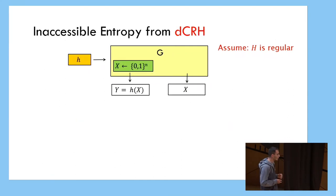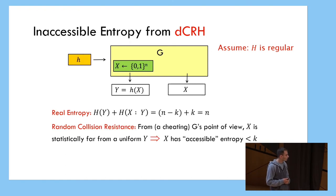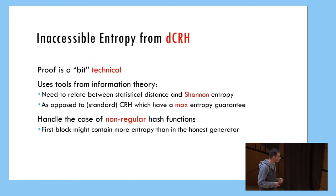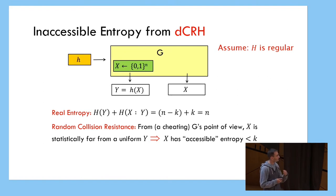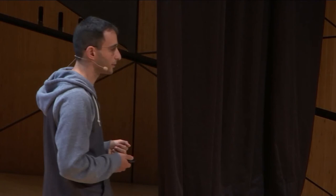Even if you take a cheating generator — no matter how it samples some randomness s1, outputs some y, uses randomness s2, and outputs some x in the pre-image of y — the real entropy is the same. But the accessible entropy is the entropy of y plus the entropy of x conditioned on y and s1. For any efficient generator, if conditioned on the randomness of the first message, the second message has no more entropy. This is why we have inaccessible entropy. Now replace CRH with DCRH: the real entropy is still the same, but we have a weak notion of inaccessible entropy, because from a cheating generator, x can be quite random but it has to be statistically far from a random pre-image of y. And if you're statistically far from a uniform random variable, you have less entropy than that variable. This is the heart of the proof.